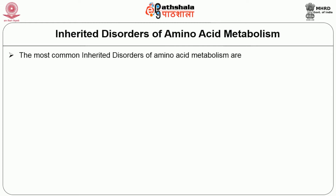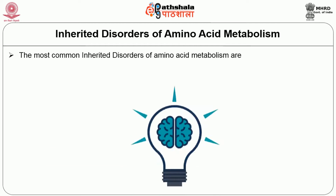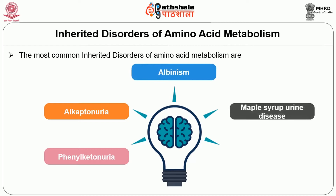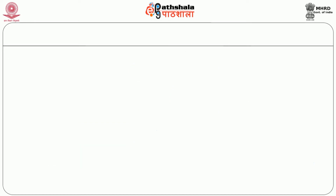The most common inherited disorders of amino acid metabolism are Phenylketonuria, Alcaptonuria, Albinism, Maple Syrup Urine Disease, and Homocystinuria. Let us discuss the first important type: Phenylketonuria.